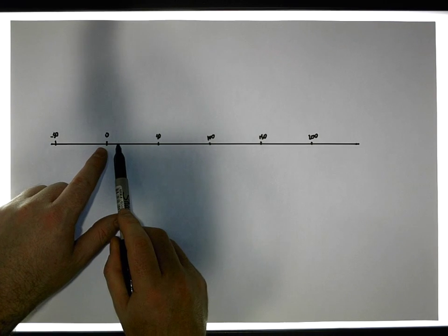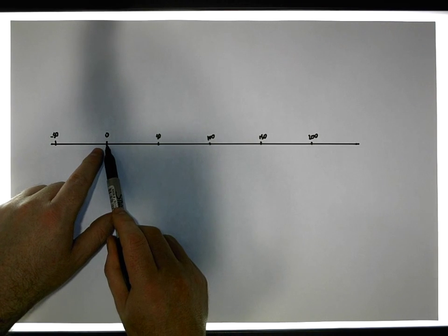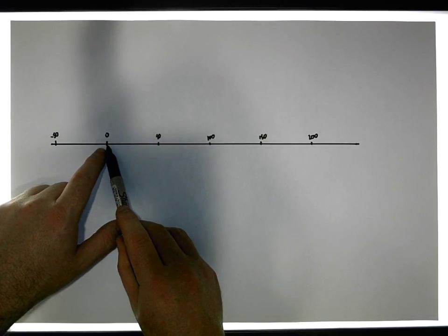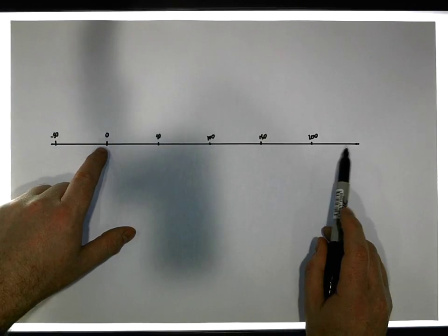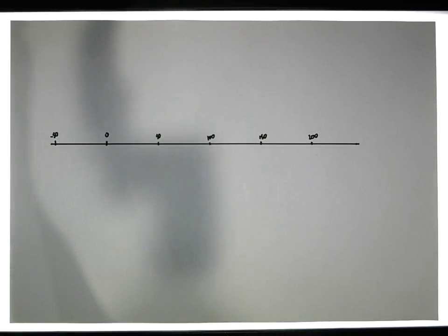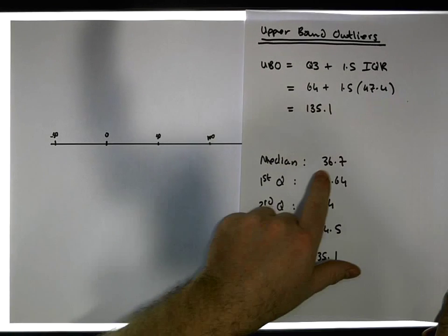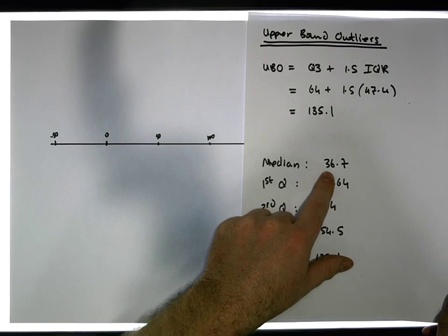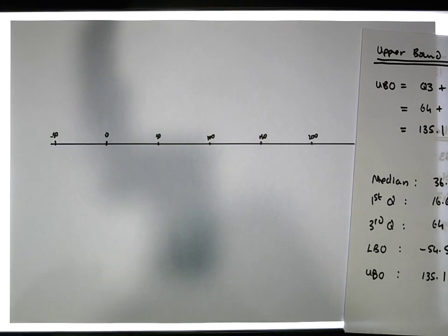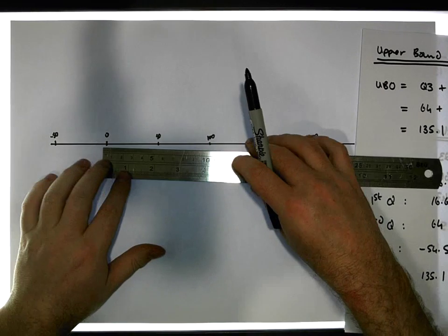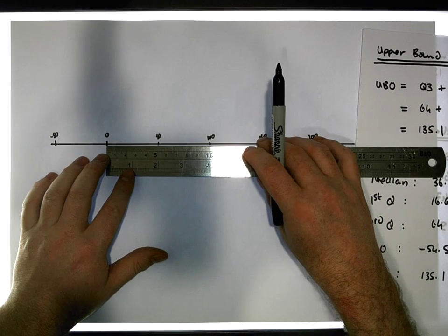All of our observations relate to the number of Facebook friends, so they are zero or more. We'll mark off our values: the median is at 36.7, which falls between the 0 and 50 marks on the scale.